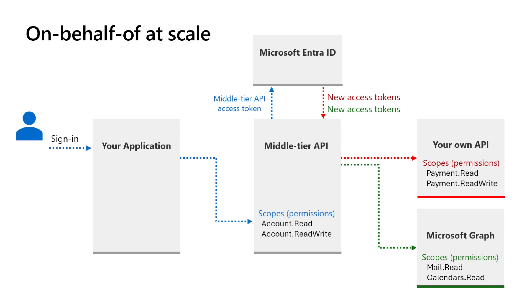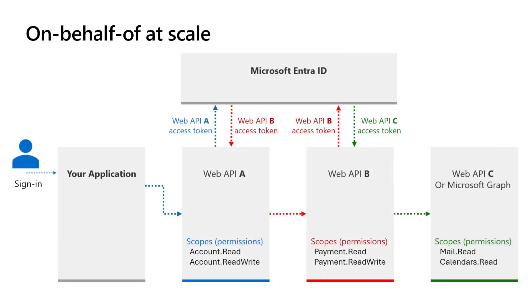Now that you know how to configure the On-Behalf-Of flow, you can take it to the next level by scaling this model to all your resource APIs. If you have multiple downstream APIs, configure the middle tier API to exchange its access token with new ones that fit each downstream resource API it invokes. Or in a chain of APIs, where the first API invokes a second and the second invokes a third, the first API will exchange its access token for the second API, and the second API will exchange its access token for the third one.